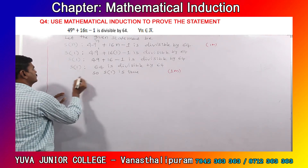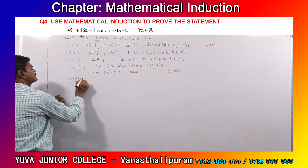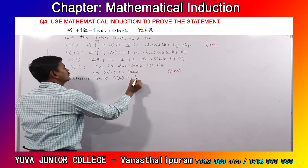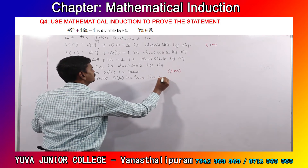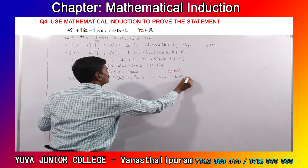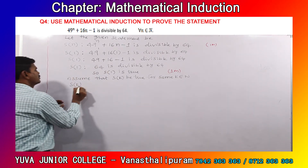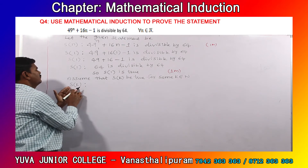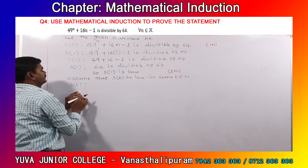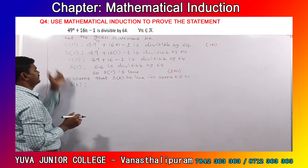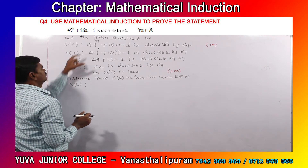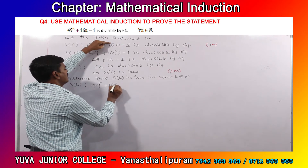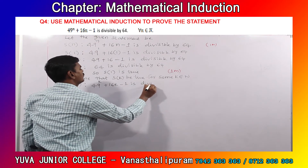Next we enter into the S of k part. This is the assumption stage. Assume that S of k is true for some k belonging to N. Now write S of k — since we have assumed S of k is true, we can write it. Always while writing S of k, you must see S of n and replace n with k. So: 49 power k plus 16k minus 1 is divisible by 64.